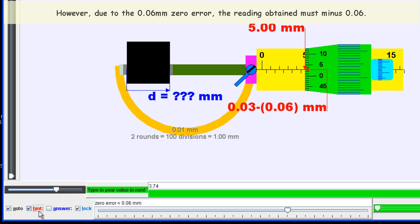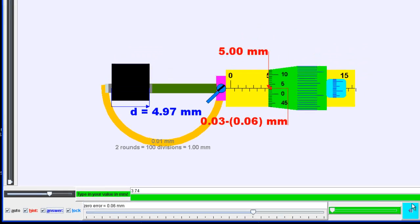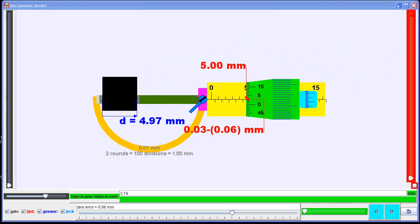Now bearing in mind there is a zero error initially, you need to subtract the zero error to get 4.97 mm.